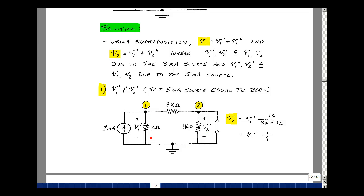Now, whatever V1 prime is, I can find V2 prime by using voltage divider because the current in these two resistors is the same. Whatever V1 prime is, V2 prime is going to be 1k over 3k plus 1k, and that's a quarter.